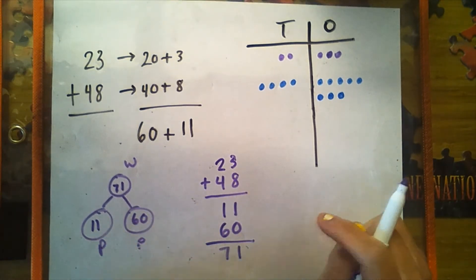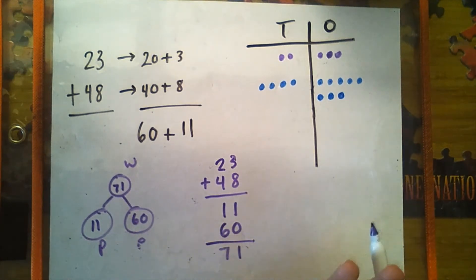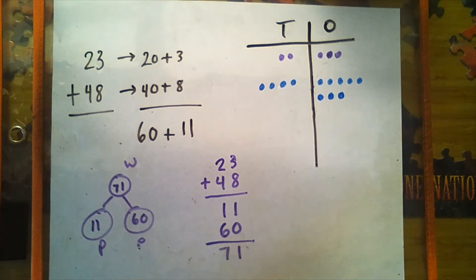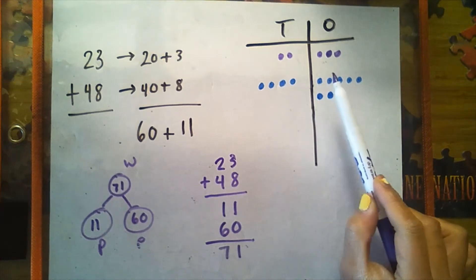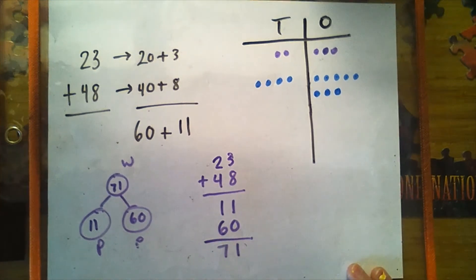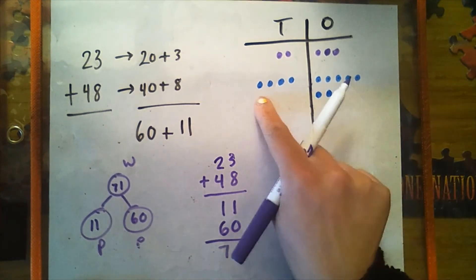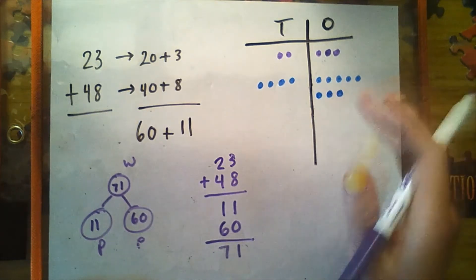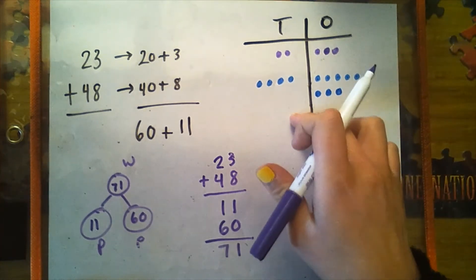I want you to pause the video here and talk with a friend or family member — how are these written methods the same and different? Welcome back, my friends. They all equal 71. Both models show adding like units to find the total. When I look at the chip model, I can see 23 and 48, but I can also see 60 and 11. I see 60 with six 10s here, and then 11 with eleven 1s, or 110 and 11, and then six 10s.